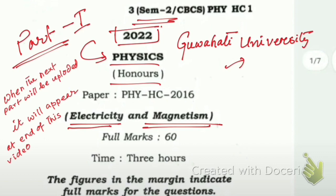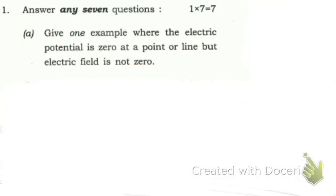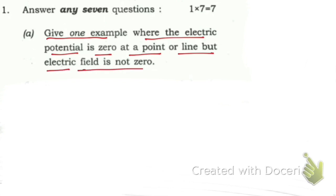The first question: give one example where the electric potential is zero at a point or line but the electric field is not zero. We can take the example of a dipole — this is positively charged and this is negatively charged, separated by a distance of 2a.